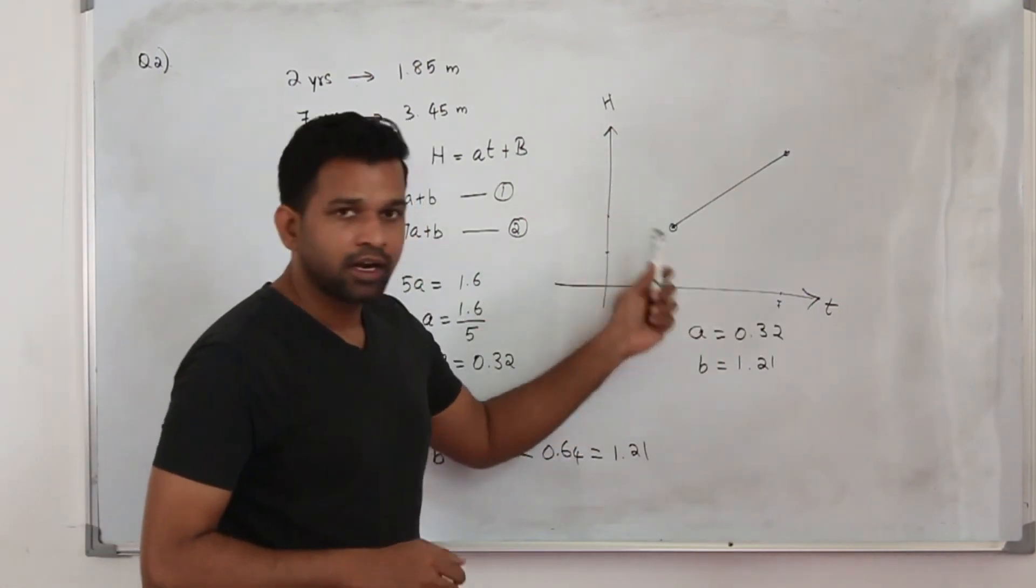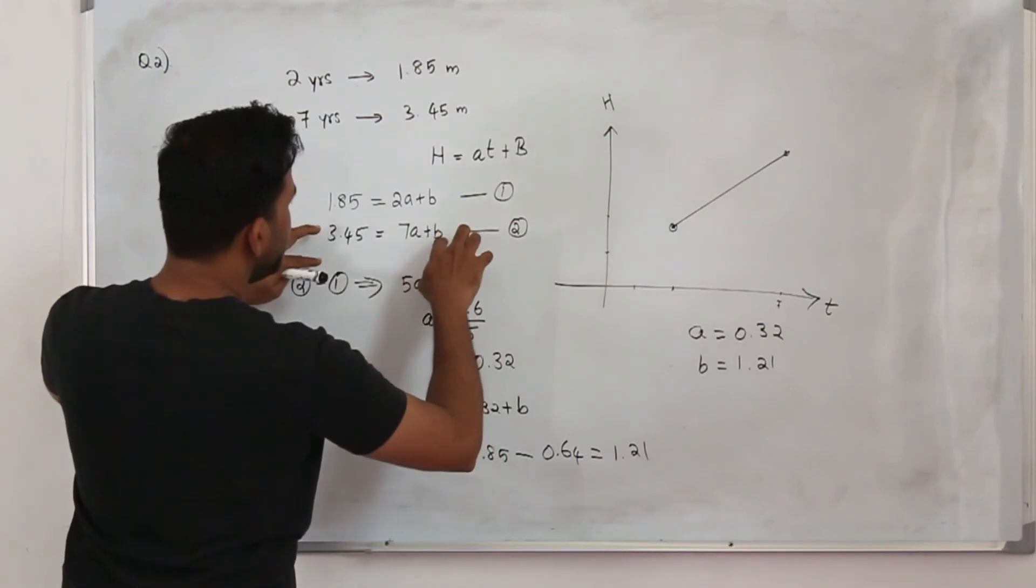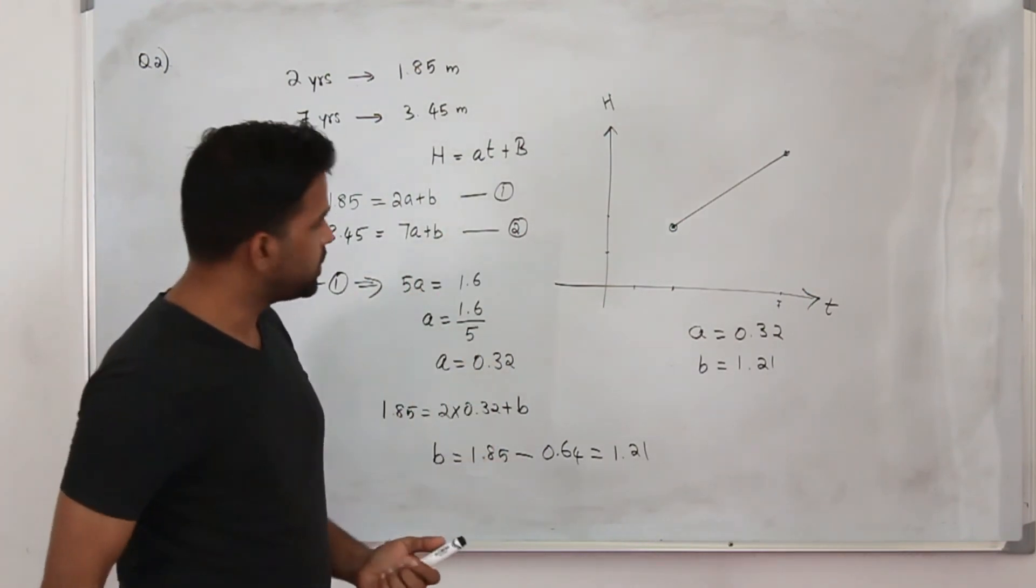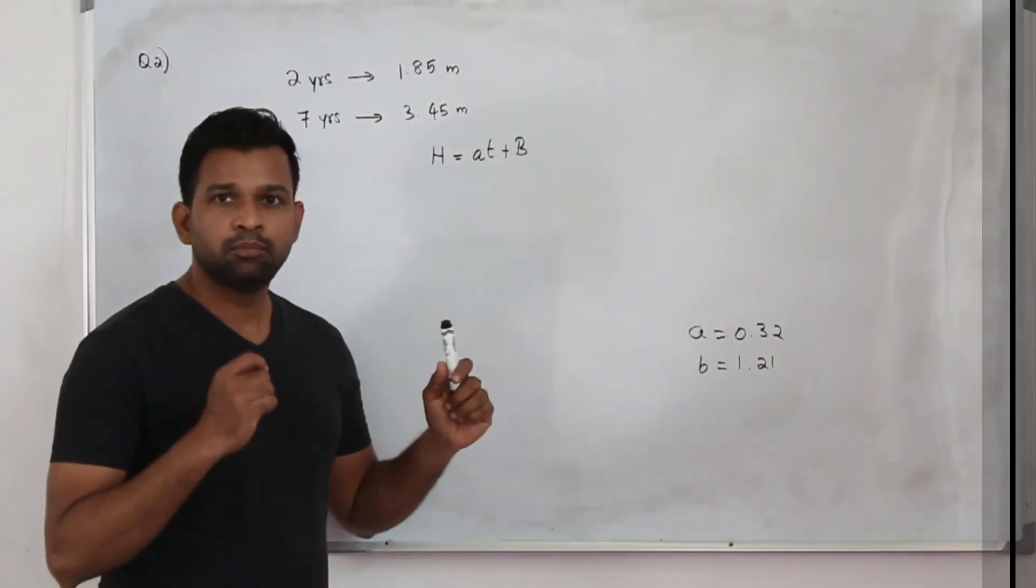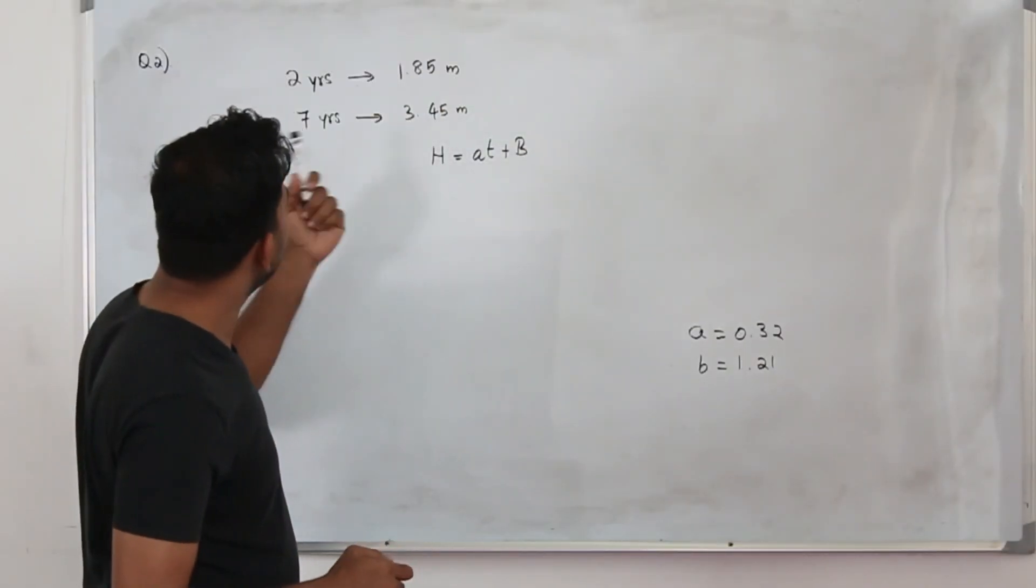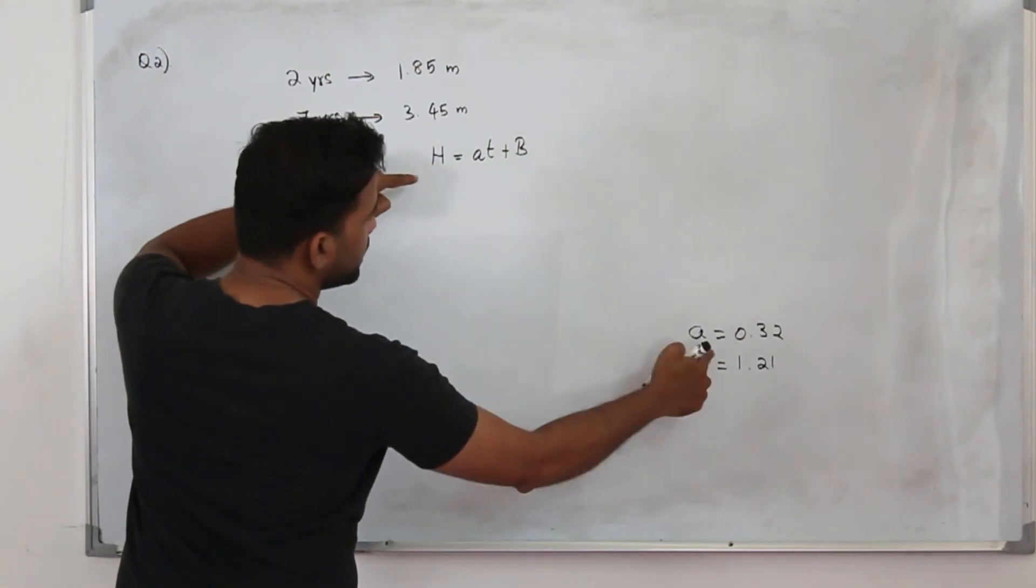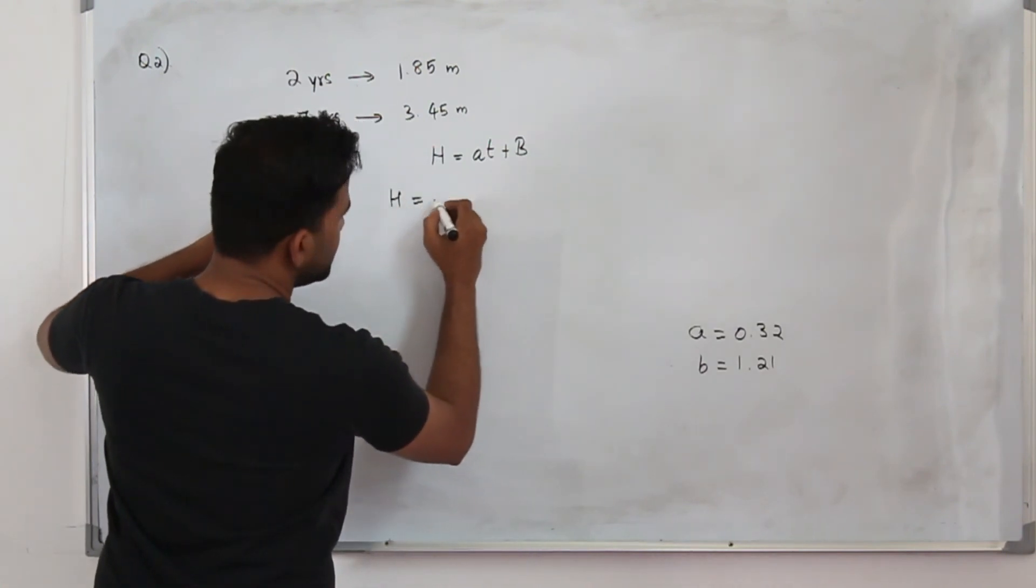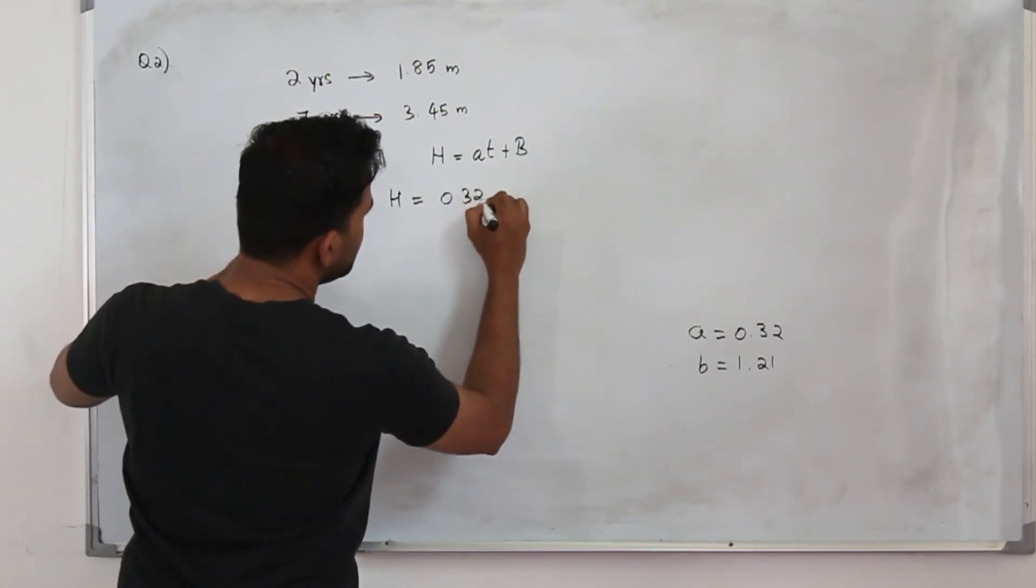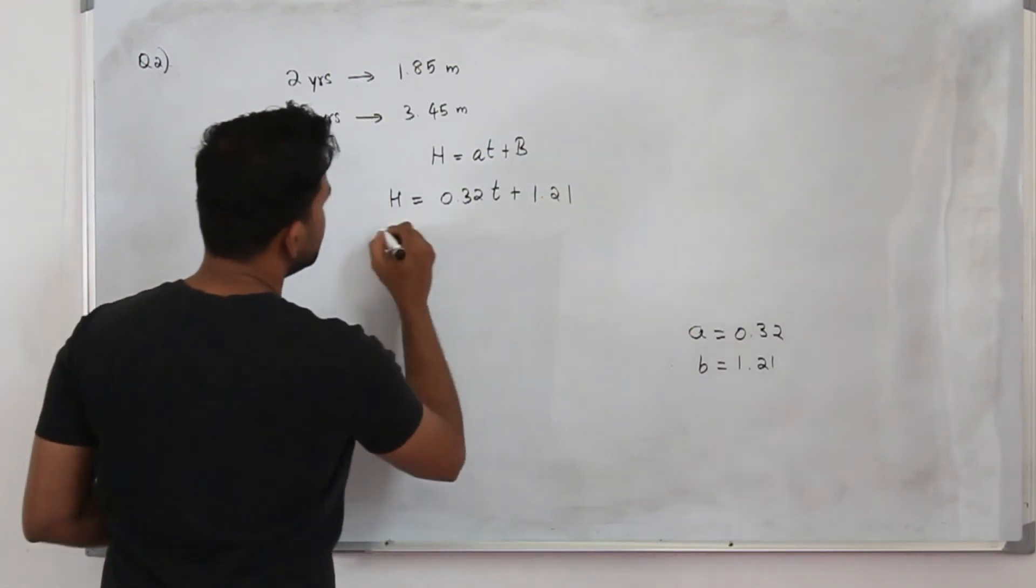You don't need to worry about this diagram at all, just plug in the values here, a and b form two equations and solve simultaneous equation. You got four marks for this question. In part b, they want you to find the height of the tree when it was planted. So you have this equation, replace a and b by these values. Your H is 0.32t plus 1.21, that's the equation.